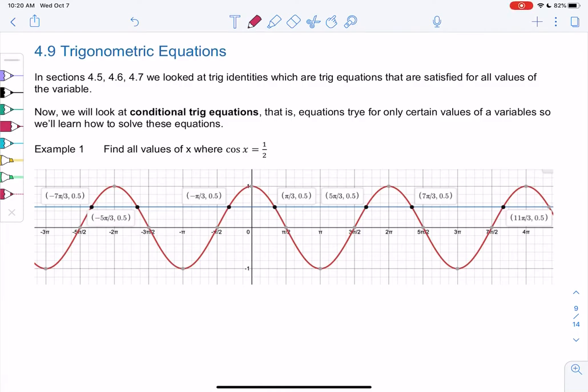We've already looked at trig identities, which were trig equations true for all values. Now we're gonna solve just regular equations like we're used to. Those are called conditional trig equations. These actually have solutions and we can solve them, so we're just gonna learn how to solve equations.